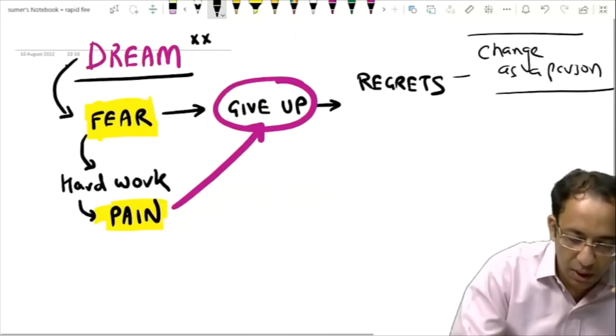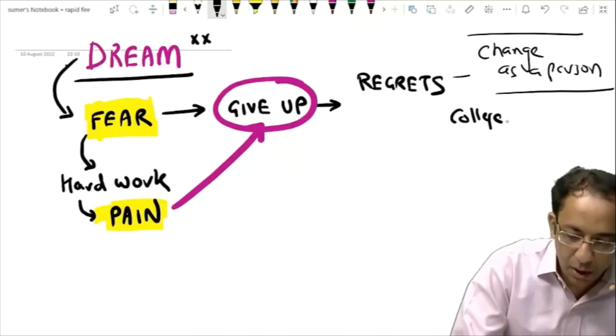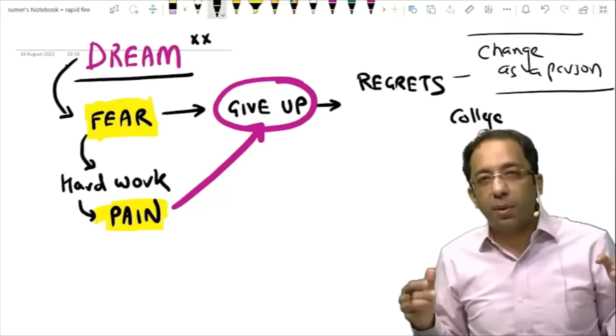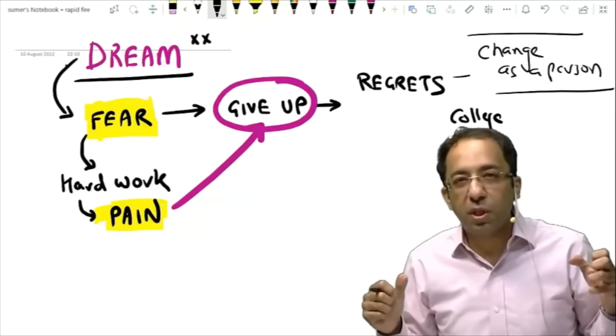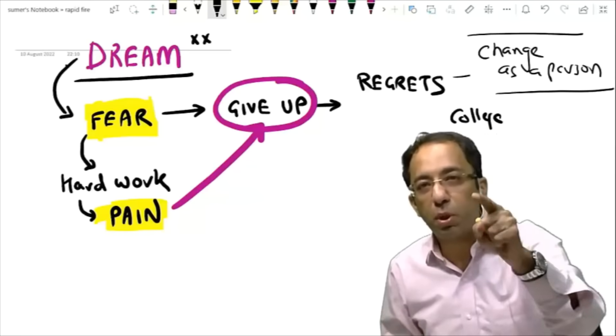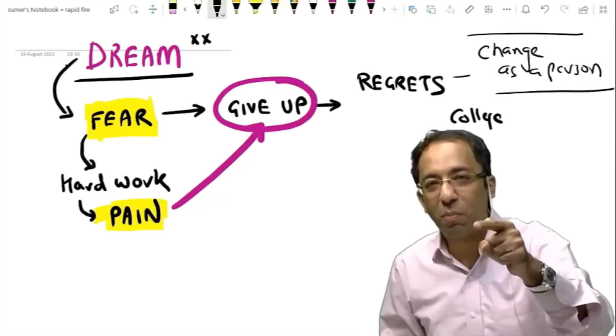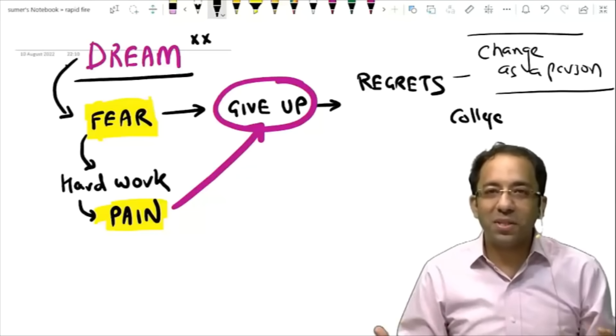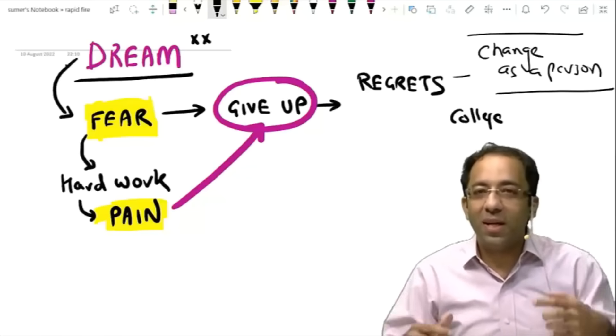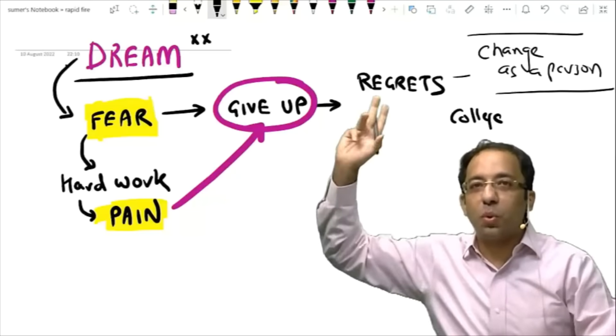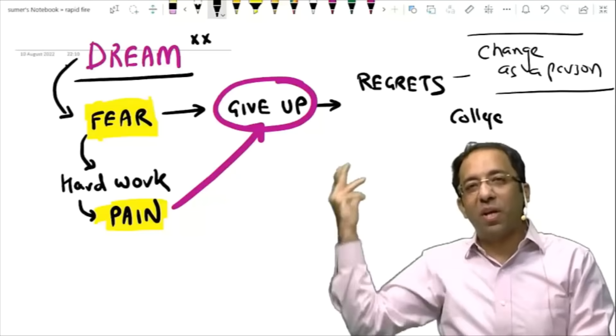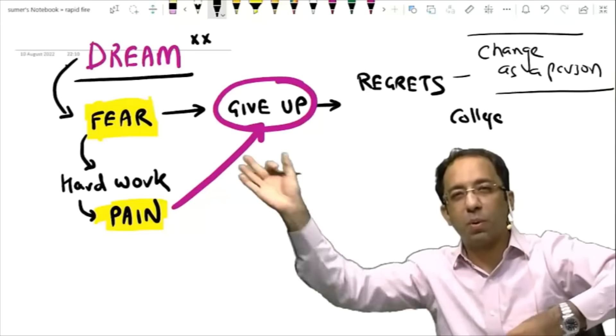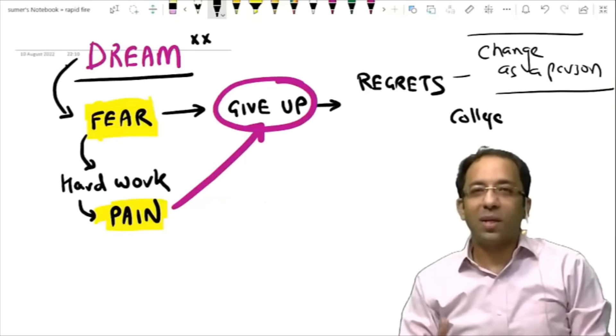Have you ever seen in your college? Sometimes you might have met some professor. Sometimes I meet a college professor jo milte hi bolta hai, saare bacho ko fail karun. Have you ever met a professor who says I will fail everybody? What is this? Why would he fail everybody? It is not to do with you. It is to do with regrets in life. If you have regrets in life you change as a person. You become somebody negative. You say isko bhi nikalo, usko bhi fail kardo. You become negative.